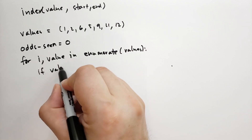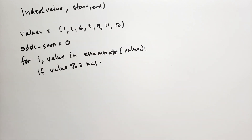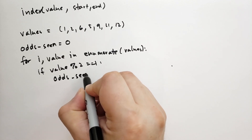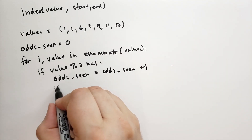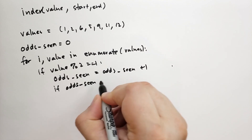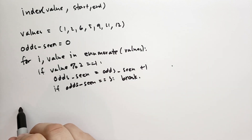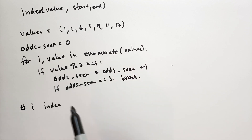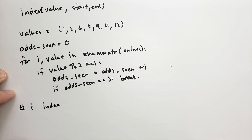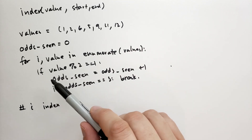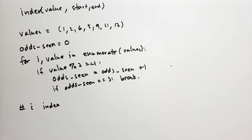If the value is odd — using the mod operator, checking if value % 2 == 1 — we increment the count of odds seen. If we've seen 3 of those odds, we break out of the loop. After the loop, i will hold the index. Note that the for loop doesn't destroy variables after the block runs; they persist. However, if the loop never executes because you're iterating across an empty sequence, those variables will never be set and you'll get a NameError.